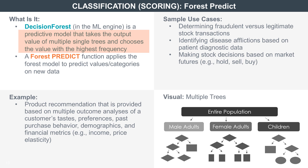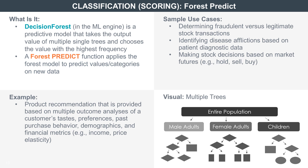In other words, the outcomes of multiple single trees are considered, and the outcome with the greatest frequency among all the single trees becomes the preferred choice. The FOREST PREDICT function simply applies this random forest model on new data to obtain data classifications. The use cases are similar to those for single tree.